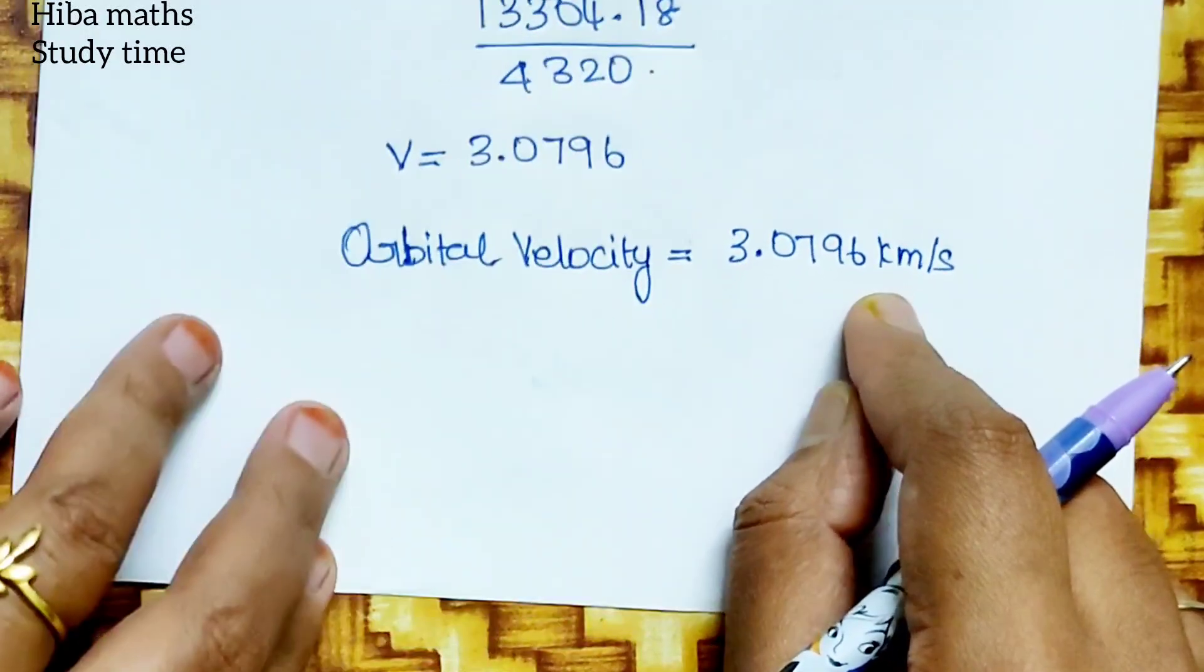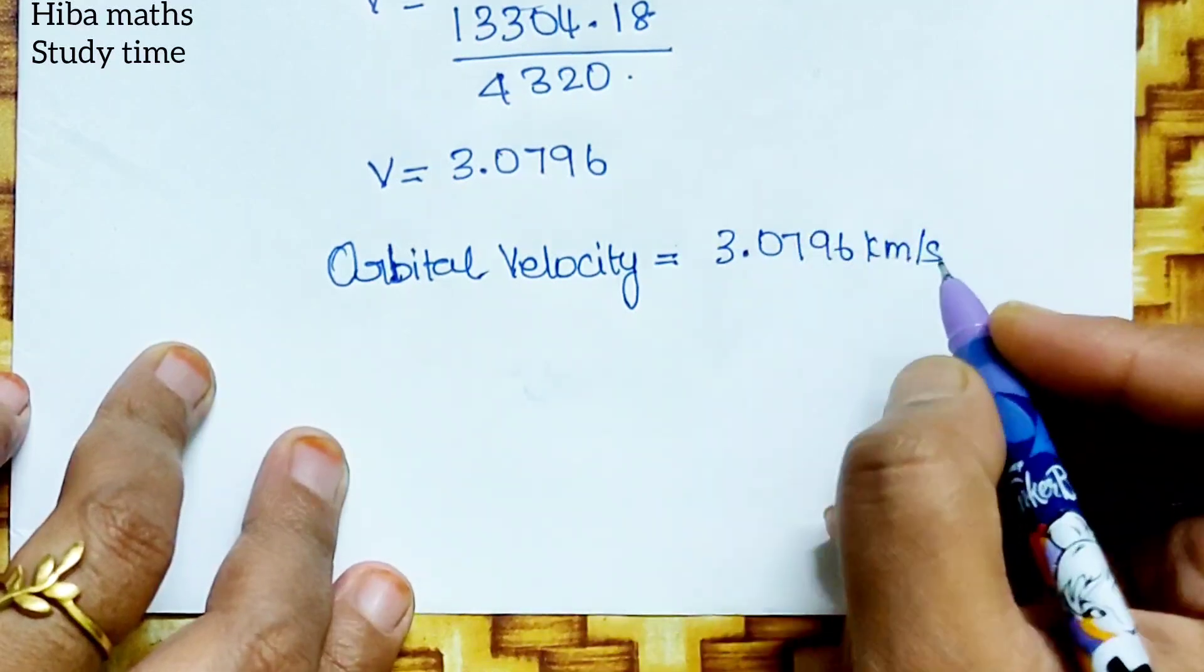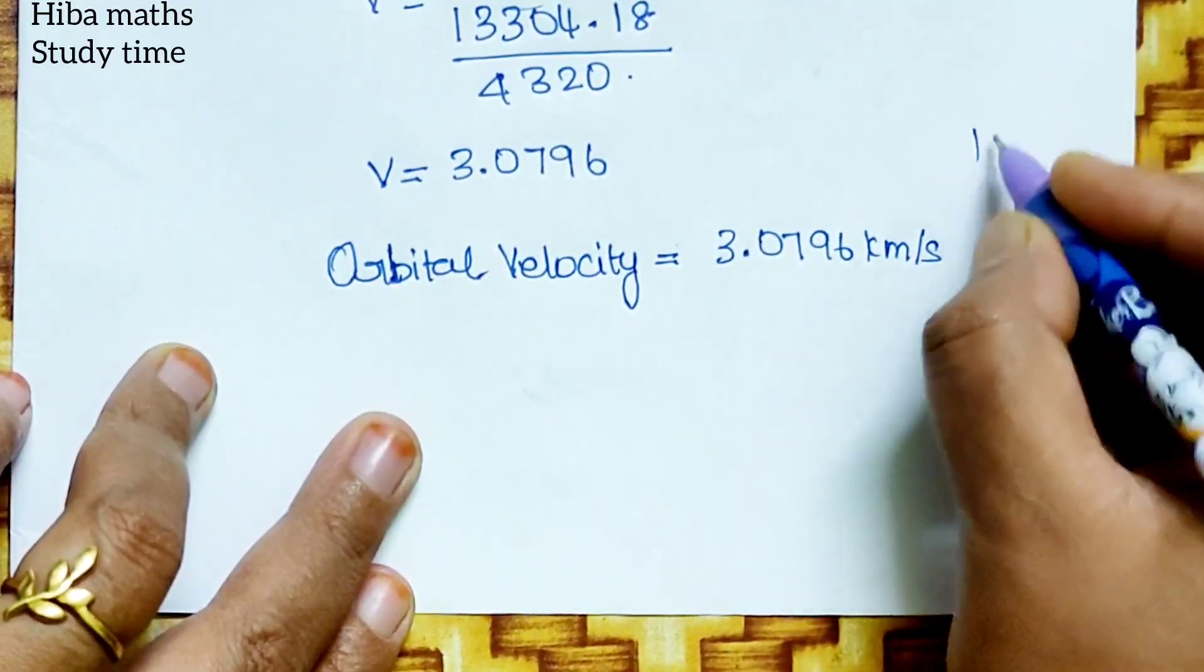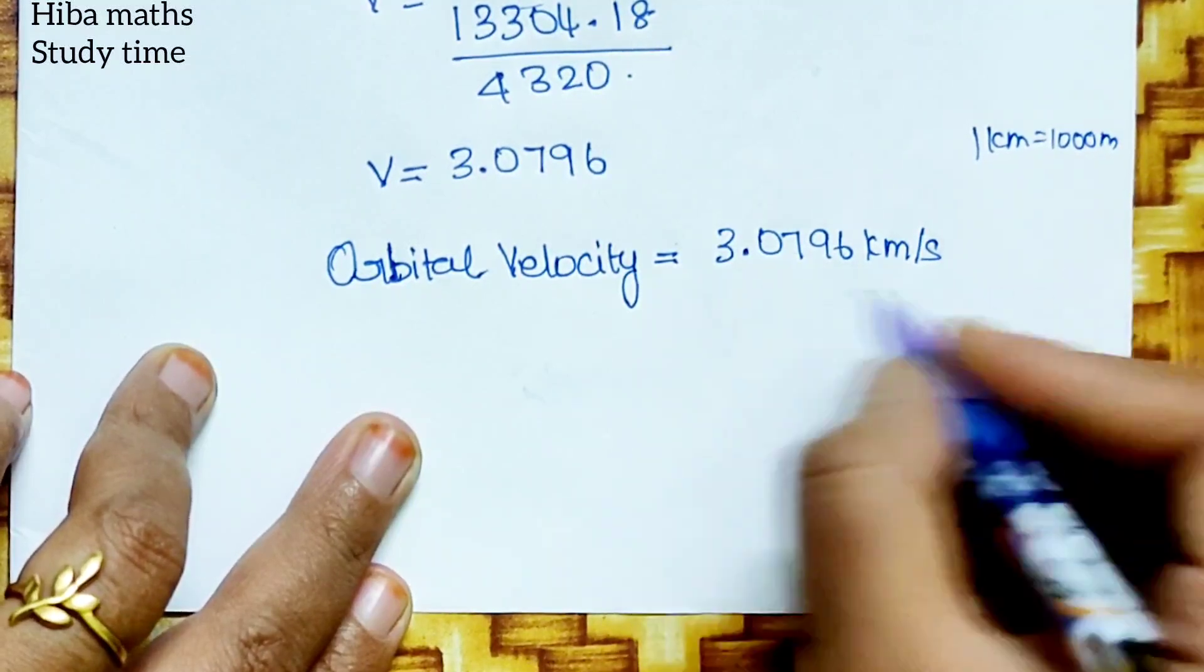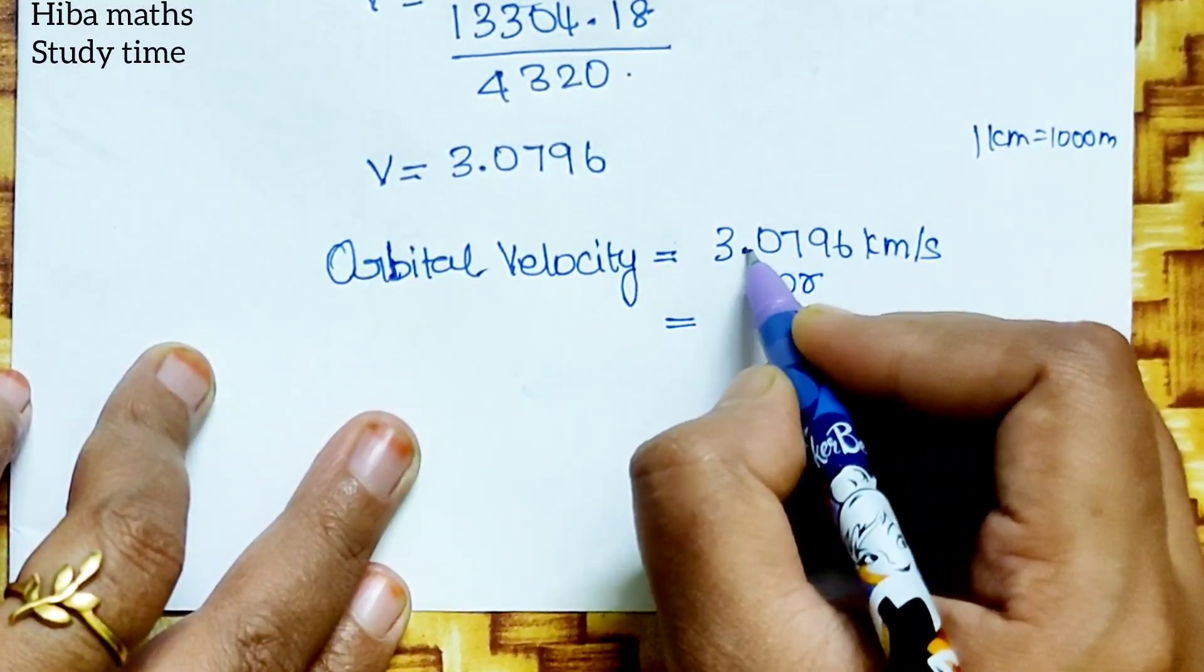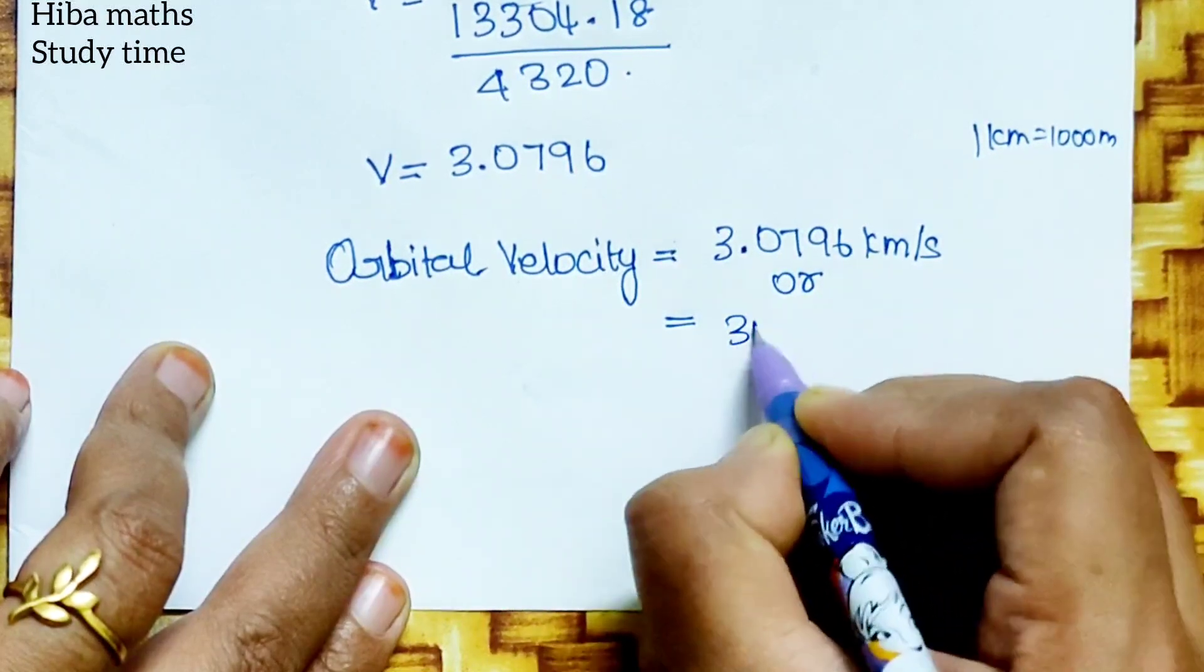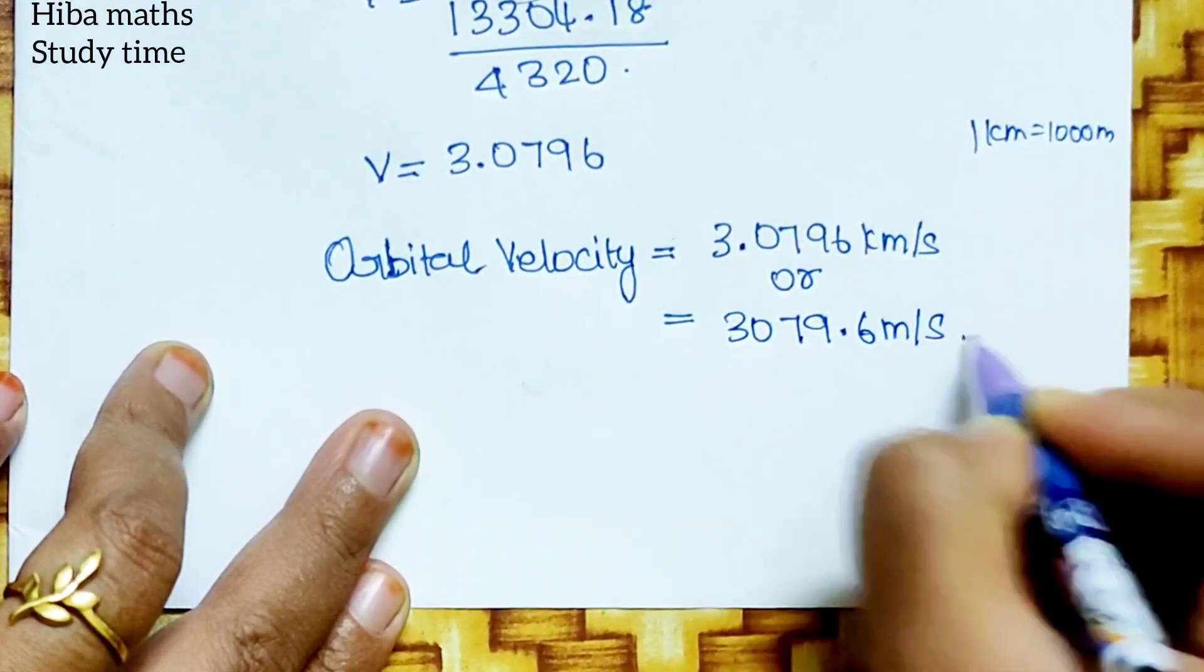If you change a meter in a meter, this will change a little. Meter per second. 1 kilometer is equal to 1,000 meters, or .3 number is 3,079.6 meter per second.